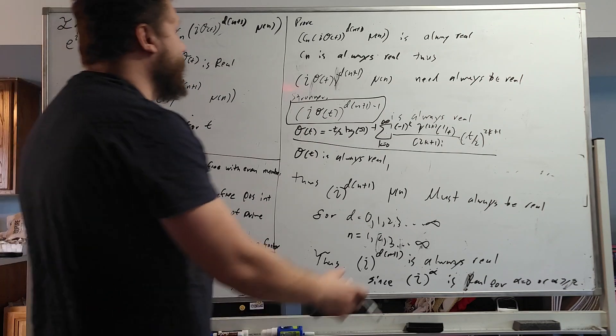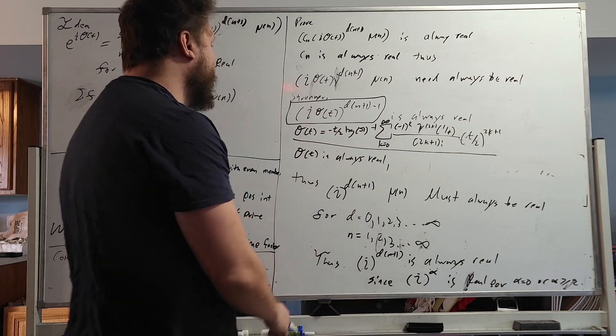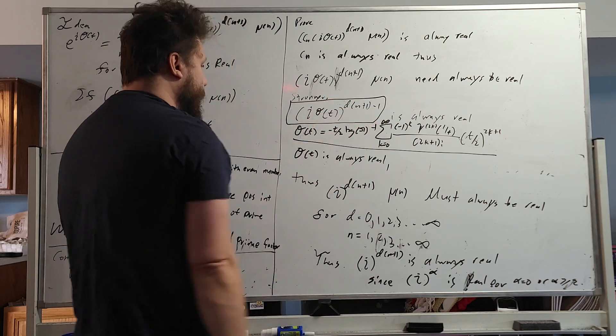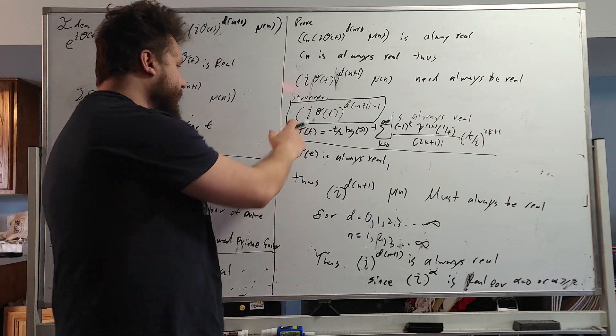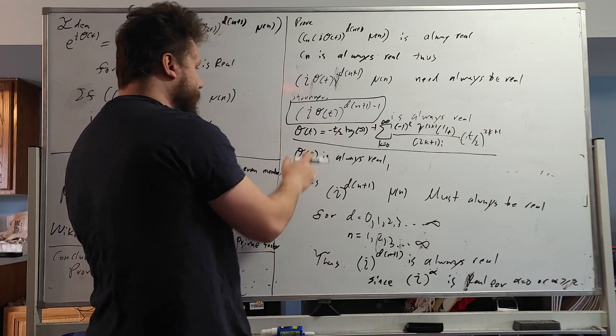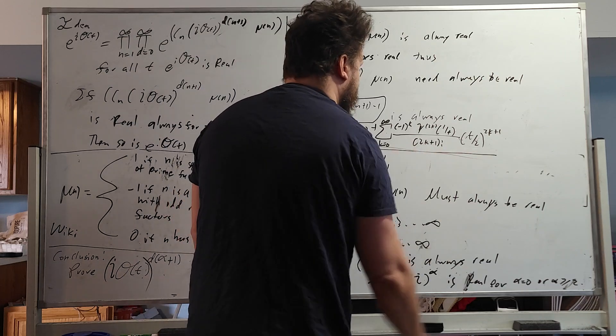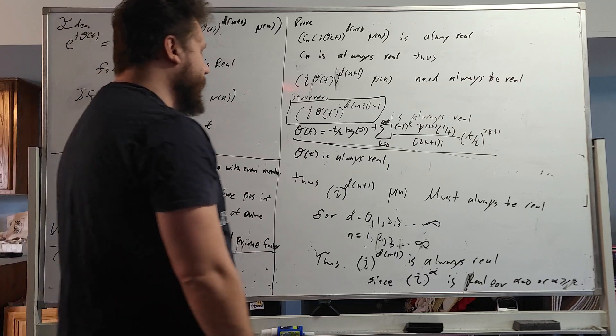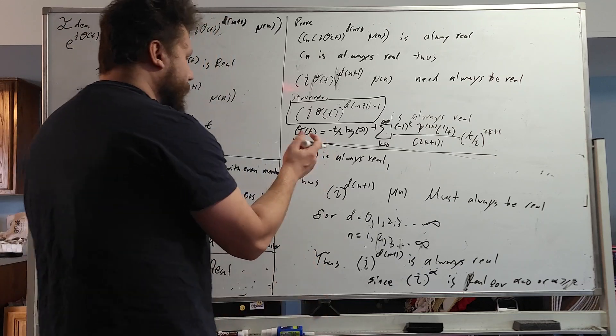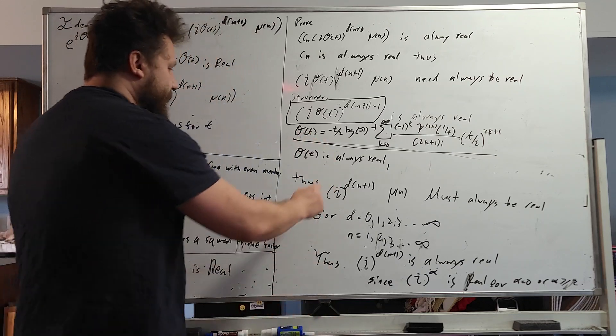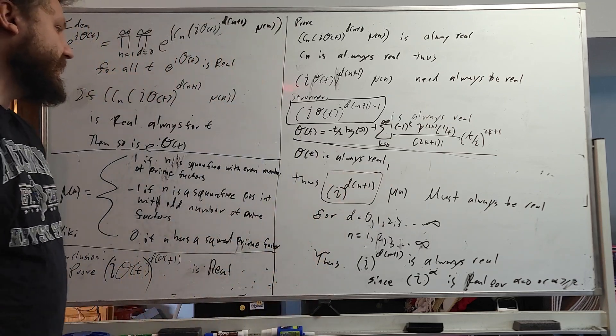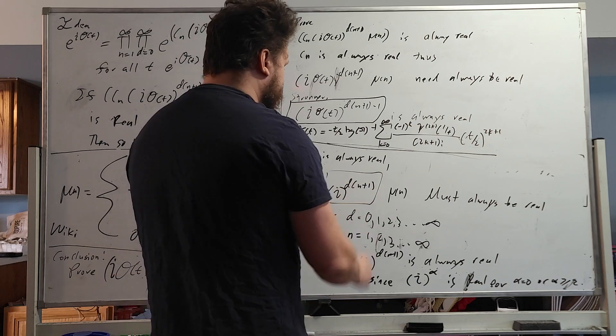So we're going to go over here. This is just a restatement of what I just said. So we just need to show more or less that this is good. Now, theta t, or the Riemann-Siegel theta function, is defined by this right here, and there are no imaginary parts to the whole thing. So more or less, what we really just need to look at is this i to the d n plus 1.